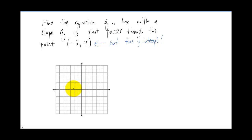So one thought would be well maybe we can plot the point. Maybe we can graph the equation and figure out from the graph what the y intercept is. So here's your point negative two four. And if we count out a slope of one third that's a rise of one and a run of three.